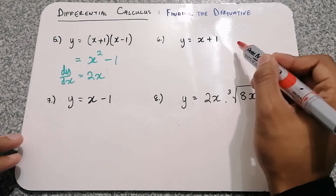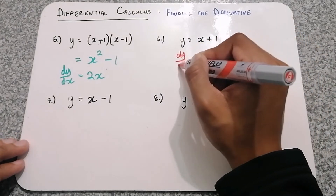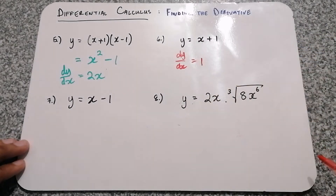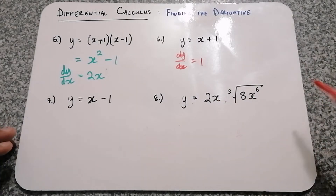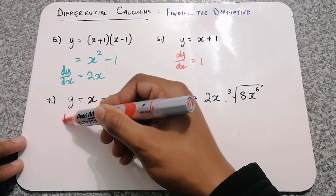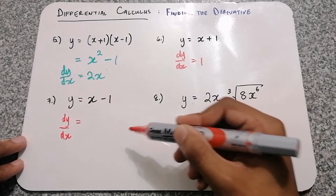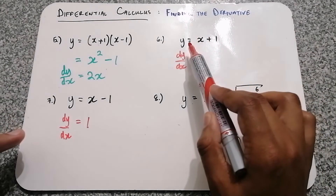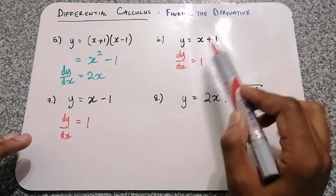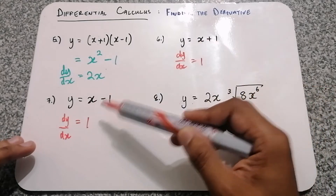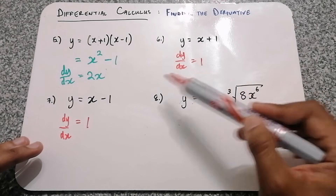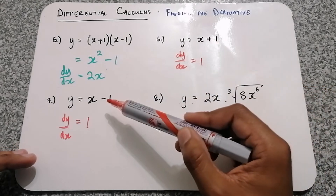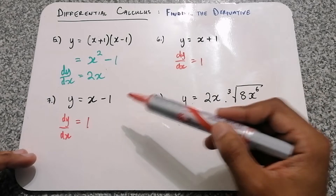Question 6: y is equal to x plus 1. The derivative is just the invisible 1 in front of the x, and the plus 1 constant becomes 0. Question 7 is the same thing — the number in front of the x is just 1, and the constant negative 1 falls away. Notice that even though questions 6 and 7 have different equations — x plus 1 and x minus 1 — the derivative is the same, because the derivative is simply the gradient. These lines have different y-intercepts but the same gradient.